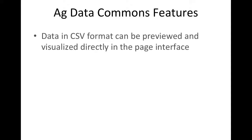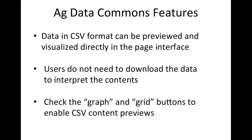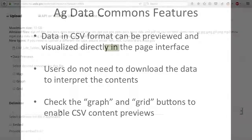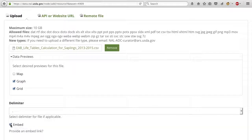The AgData Commons also prefers CSV files because the data can be previewed and visualized directly in the page interface. Users do not need to download the data to see and interpret the contents. If the grid and graph boxes are checked when uploading the data, users can take full advantage of these preview and visualization tools built into the AgData Commons.